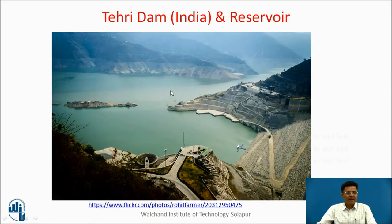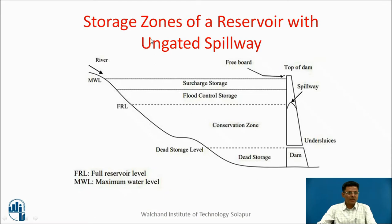This is Tehri Dam from India and the reservoir formed by this dam. Our problem deals with estimating the capacity of such a reservoir for satisfying a particular inflow-outflow pattern. Outflow will be due to demand. These are different storage zones of a reservoir with an ungated spillway: dead storage, conservation storage zone, spillway crest, full reservoir level, flood control storage, surcharge storage, and maximum water level. We depend upon the conservation storage for satisfying demand.